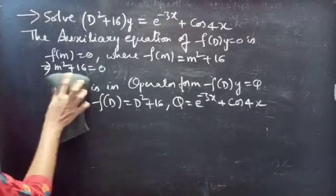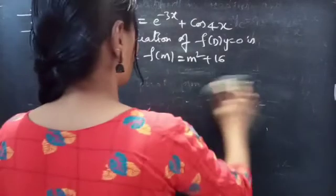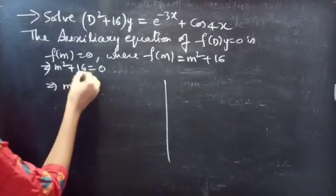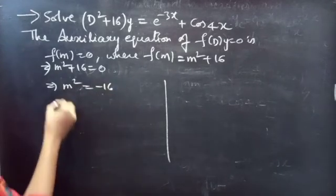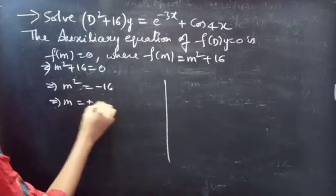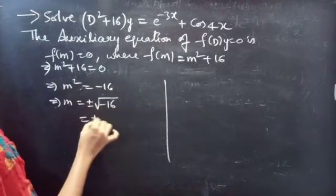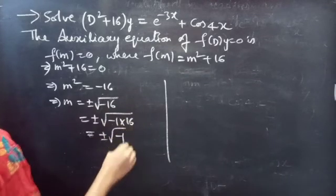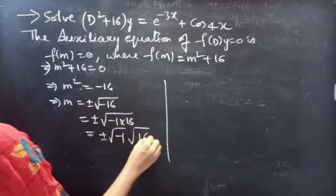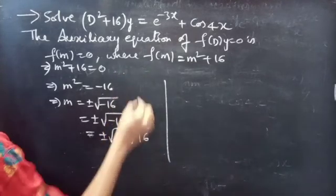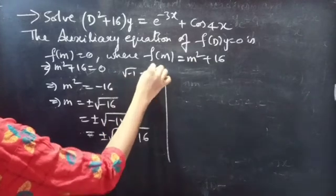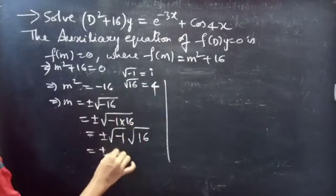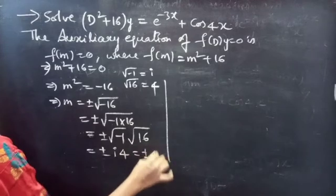We can find the roots in two ways. Taking +16 to the right-hand side: m² = −16, so m = ±√(−16). Writing √(−16) as √(−1)·√(16), and knowing that √(−1) = i and √16 = 4, we get m = ±4i.